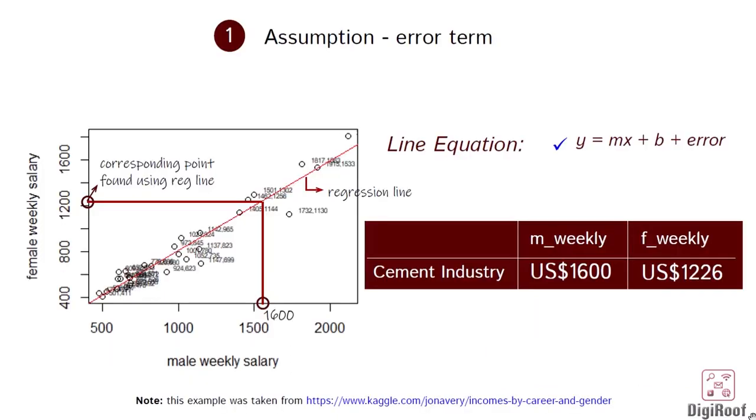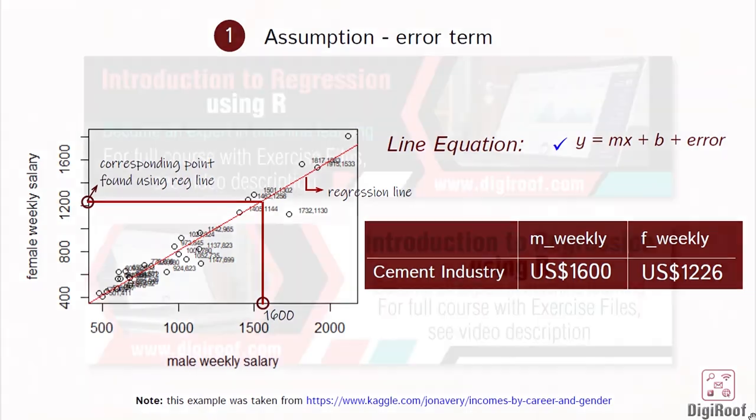As explained though, this might not be the exact value since all our estimates of response variable are based on the regression line, and there exists an error between the actual and the predicted value. In terms of line equation, we can therefore say that the actual value of response is y equal to mx plus b plus error. We will talk about the second assumption associated with regression in the next video.